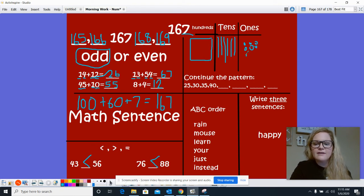25, 30, 35, 40. What are we counting by? 5's. All right. So next would be 45, 50, 55, 60.